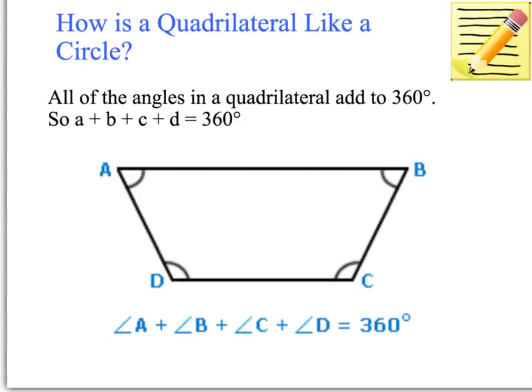Now a quadrilateral is like a circle — did you know? The way it is like a circle is that all the angles add to 360 degrees, just like a circle. So angle A plus B plus C plus D equals 360 degrees. That's very important to remember when we are trying to work with quadrilaterals and angle sum.